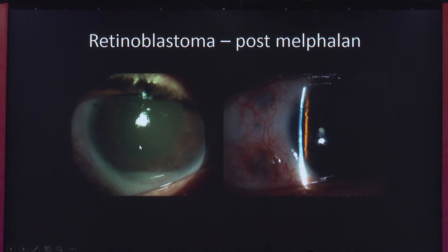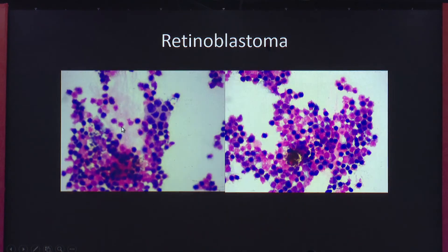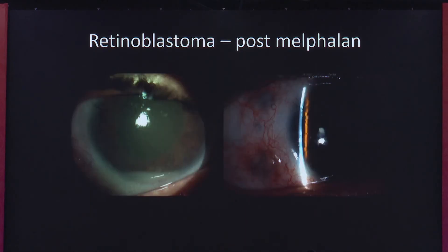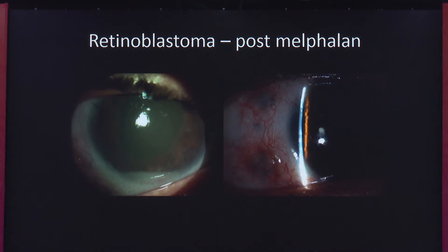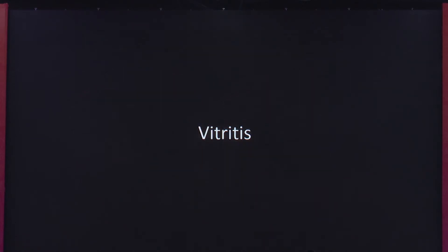We did a simple AC tap which showed retinoblastoma cells, and we gave an intravitreal melphalan. Post-treatment, you can see the corneal edema has regressed and the vitreous cells are clear — we are able to see the fundus. This is diffuse infiltrating retinoblastoma.